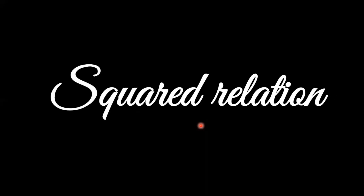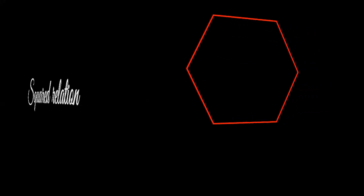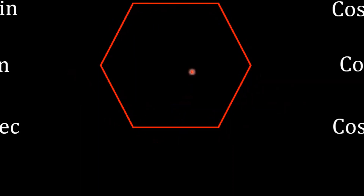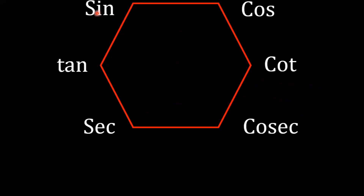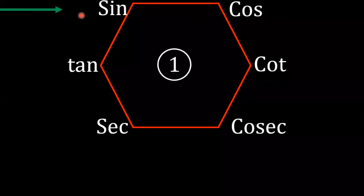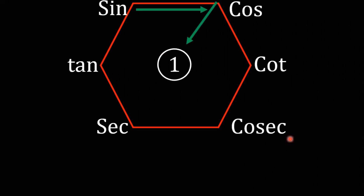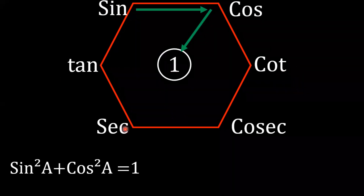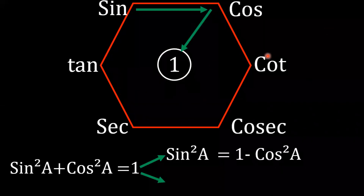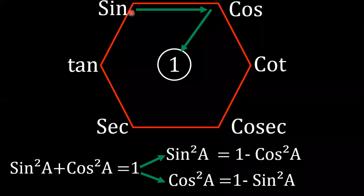By drawing just a single hexagon and placing the trigonometrical ratios in their correct positions. This is our hexagon. We will be writing sine, then cosine, tangent, cotangent, secant, cosecant. Now, if you go in a 7 pattern, you can see: sine squared a plus cos squared a is equal to 1.